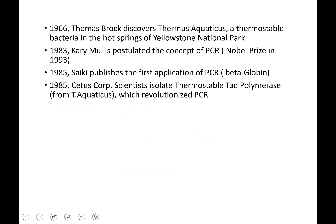So the history of it was back in 1966, Thomas Brock discovered a bacteria from Yellowstone National Park from a hot spring, and so it grows at a very high temperature. So then it was in 1983 that this fellow, Cary Mullis, who was a complete hippie, postulated the concept of PCR, and in fact he won the Nobel Prize for this in 1993.